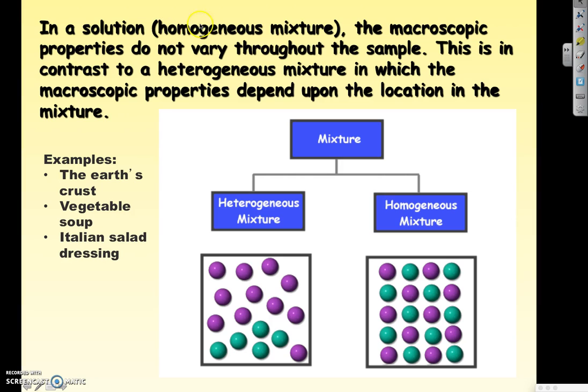In a solution or a homogeneous mixture, the macroscopic properties, that means what we can see with our eyes, do not vary throughout. So, you can't actually see the different components. In contrast to that heterogeneous mixture, you can see the different parts of it because they all depend on the location within the mixture. Some examples of heterogeneous mixtures would be the earth's crust, vegetable soup, Italian salad dressing.